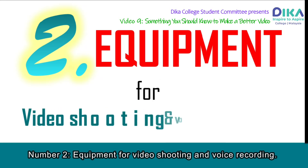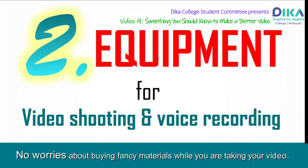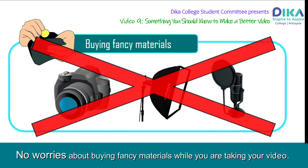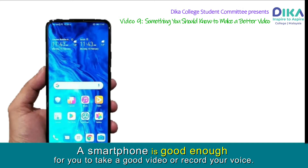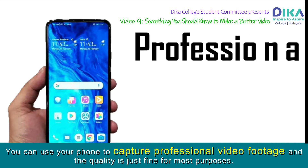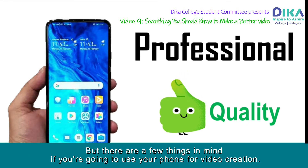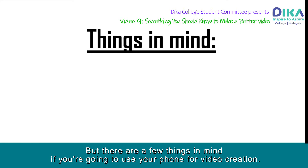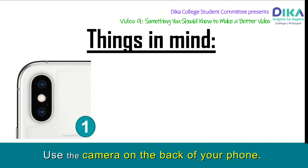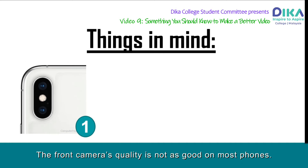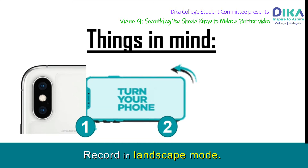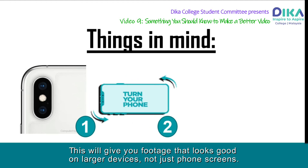Number 2: Equipment for video shooting and voice recording. No worries about buying fancy materials while you are taking your video. A smartphone is good enough for you to take a good video or record your voice. You can use your phone to capture professional video footage and the quality is just fine for most purposes. Use the camera on the back of your phone, as the front camera's quality is not as good on most phones. Record in landscape mode — this will give you footage that looks good on larger devices, not just phone screens.